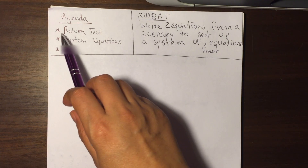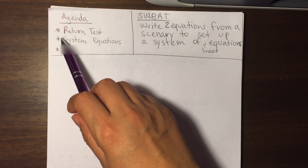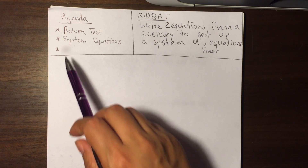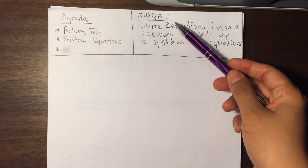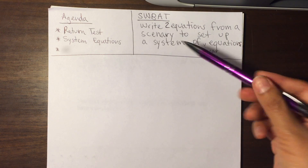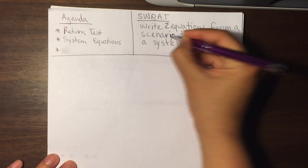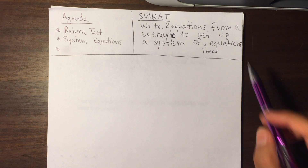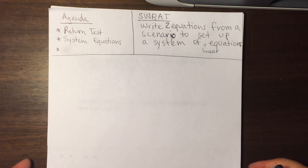Hello students, today's agenda is to return your test for unit 4. We're going to be learning about systems of linear equations, and your homework is going to be 5.1. Today students will be able to write two equations from a scenario to set up a system of linear equations. Today's goal is just to write the equations — later on we're going to be solving them, but not today.